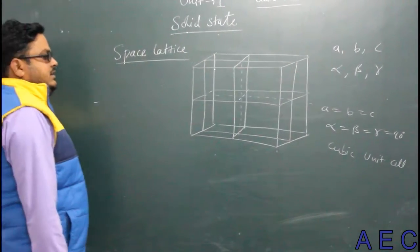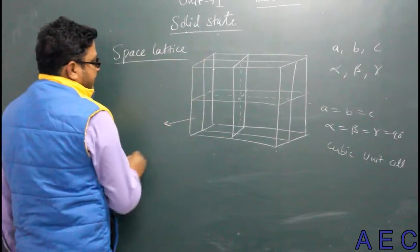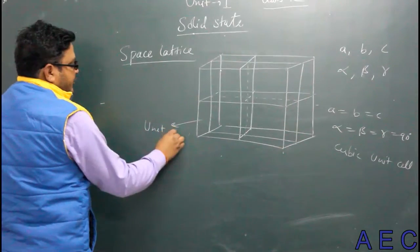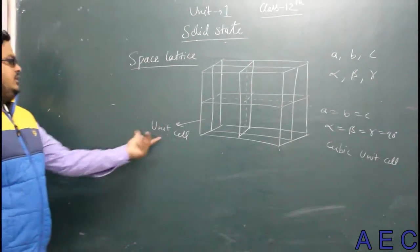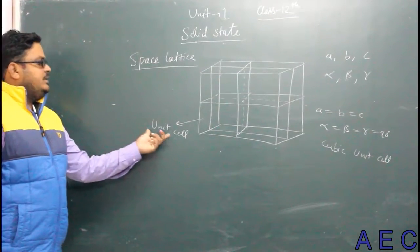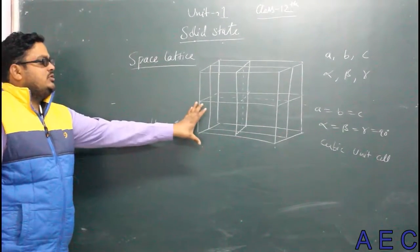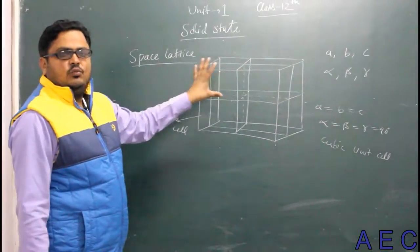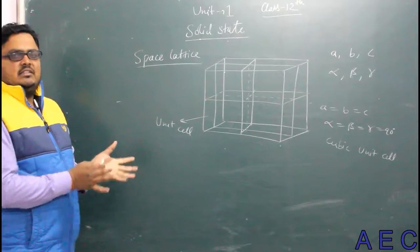In this space lattice, the smallest portion which when repeated again and again forms the whole space lattice is known as unit cell. Unit cell is the smallest portion which when repeated again and again to form the whole space lattice is known as unit cell.